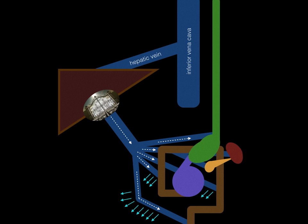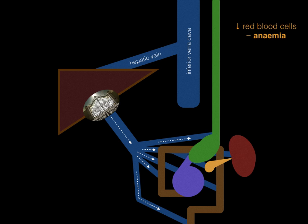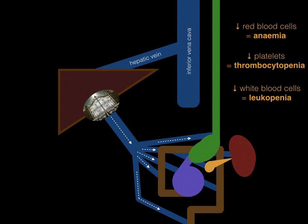In addition, the increased portal circulation pressures and blood backflow leads to splenic congestion of blood, which eventually leads to splenic enlargement called splenomegaly. Because blood cells can accumulate in the spleen and are effectively taken out of the systemic circulation, you may see a reduction in red blood cells called anemia, a reduction in platelets called thrombocytopenia, and a reduction in white blood cells called leukopenia. If all three cell lines are simultaneously reduced, this is called pancytopenia. A large spleen can also cause pain in the left upper quadrant of the abdomen and may press on the stomach, leading to early satiety or feeling full after eating less food than the individual normally would.